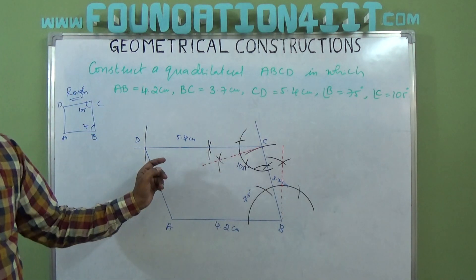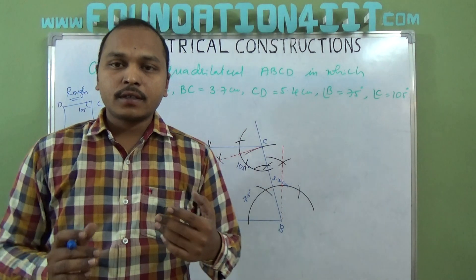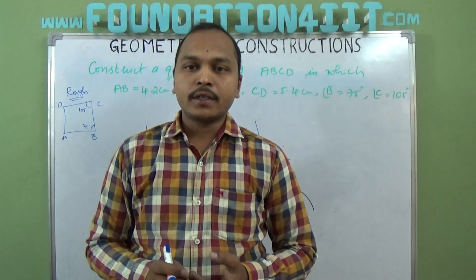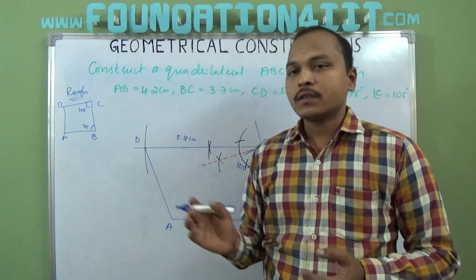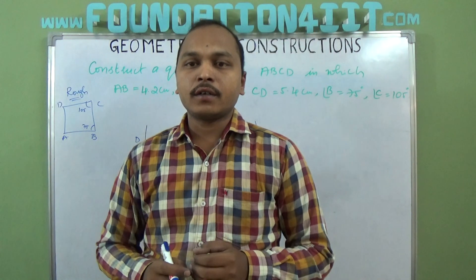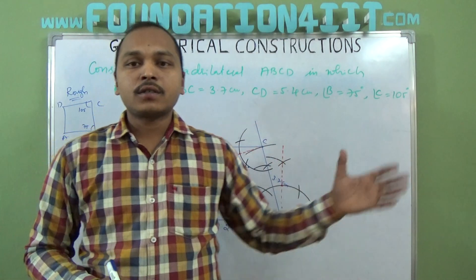Now observe here, C to D is 5.4 centimeters and B to C is 3.7. AB, BC, CD - three consecutive sides are given and two included angles are given. Whenever they will be like this we can construct quadrilateral.